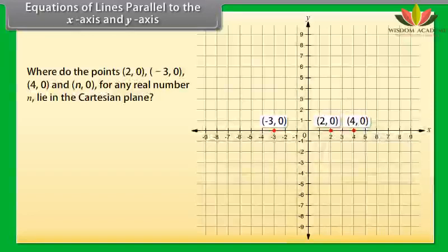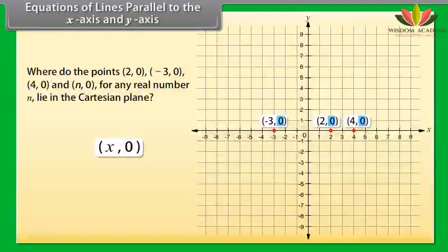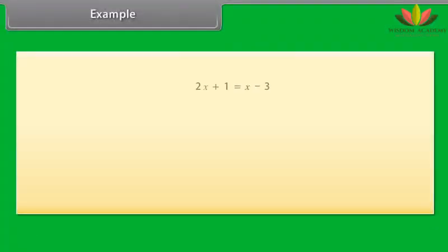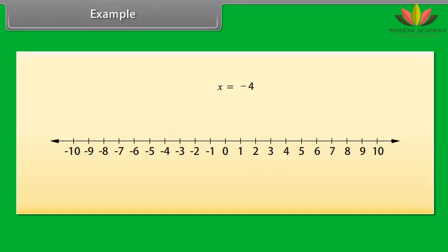Equations of lines parallel to the x-axis and y-axis: where do the points (2, 0), (−3, 0), (4, 0), and (n, 0) for any real number n lie in the Cartesian plane? They all lie on the x-axis, because on the x-axis the y-coordinate of each point is 0. Every point on the x-axis is of the form (x, 0), so the equation of the x-axis is Y equals 0. Similarly, the equation of the y-axis is X equals 0.